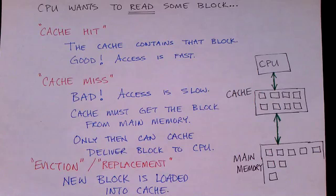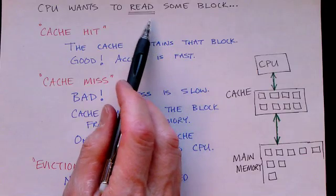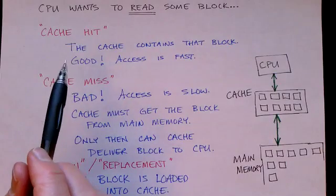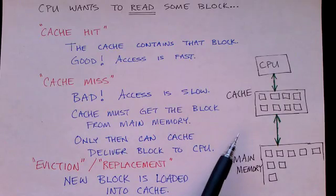Next, let's introduce these terms cache hit and cache miss. Let's say the CPU wants to read some particular block. We'll talk about writes later, but let's just focus on reading data for now. Well, there are two possibilities. Either that block is in the cache or it's not.